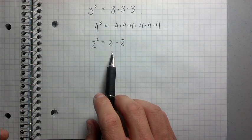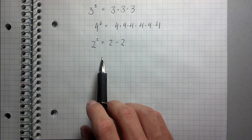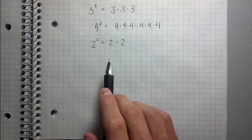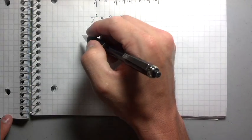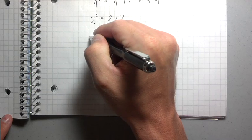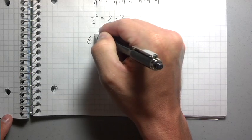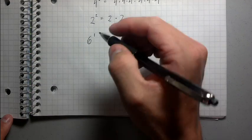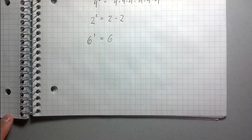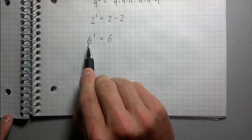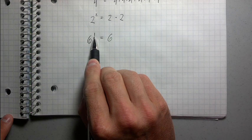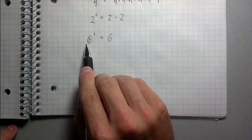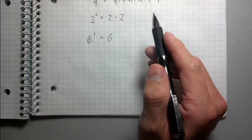But I want to go over two special cases of exponents that might not be obvious from this pattern. What if I had something like 6 to the 1? What would 6 to the 1 be? Well, it turns out it would just be 6. So the rule is: anything to the first power is itself. So 6 to the 1 is 6, 10 to the 1 is 10, a million to the 1 is a million. That's the first special case.